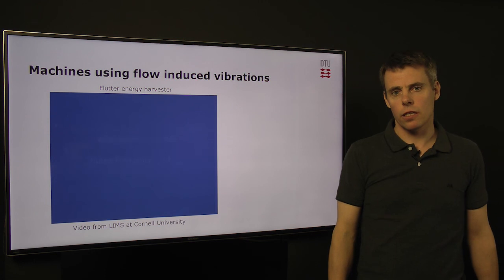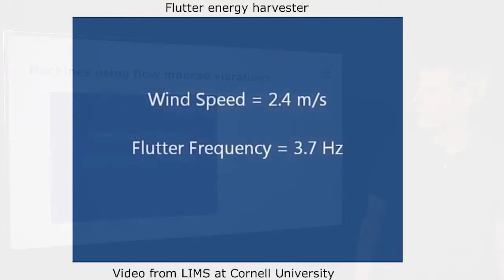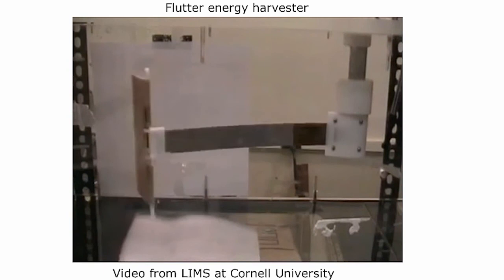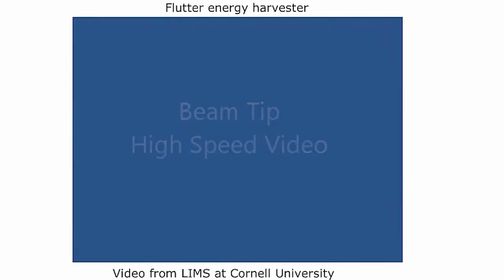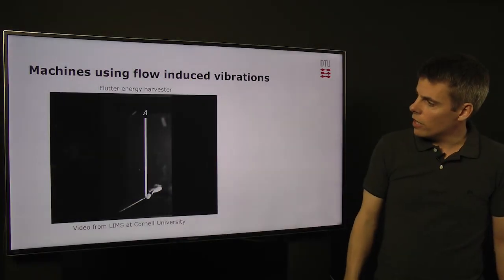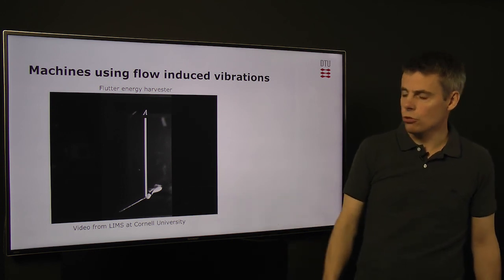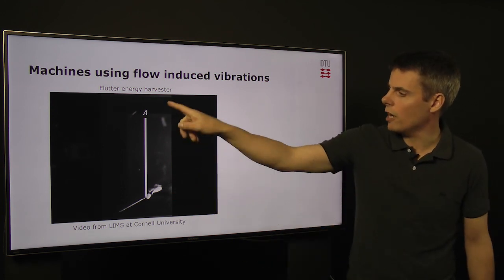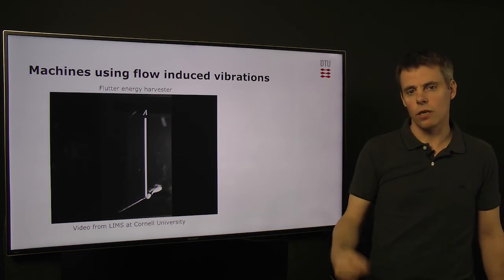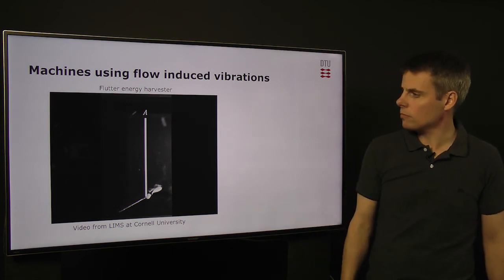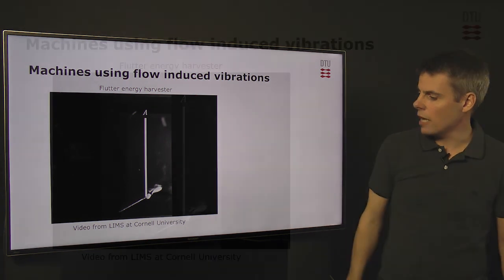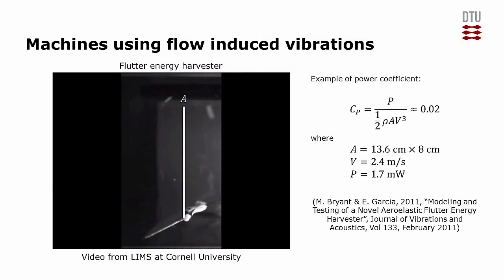The last one is flow induced vibrations that can generate electricity for example by making a beam vibrate and then have piezoelectric material that extract the energy. If we look at the motion itself of the tip of the airfoil, we see that it is vibrating due to the cross flow over it. If we look at the area we should use to calculate the power coefficient, we should use the swept area when we look at conservation of momentum.